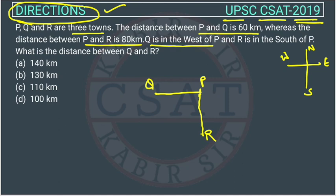What is the distance between Q and R? We have to find this dotted distance. They have given PQ as 60 kilometers and the distance between P and R is 80 kilometers.